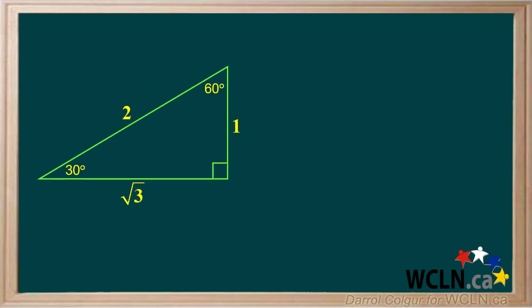Now we'll look at the 30-60-90 triangle. For a triangle with these angles, if we set the length of the shorter leg as 1, the length of the longer leg is the square root of 3, and the length of the hypotenuse is 2. These are exact values. First we'll consider the 30-degree angle. 30 degrees is 30 times pi over 180, or pi over 6 radians.